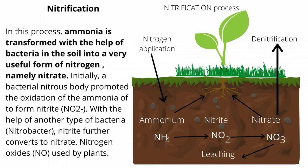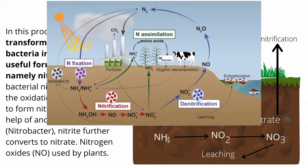Nitrification. In this process, ammonia is transformed with the help of bacteria in the soil into a very useful form of nitrogen, namely nitrate. Initially, a bacterial nitrous body promoted the oxidation of ammonia to form nitrite. With the help of another type of bacteria, nitrobacter, nitrite further converts to nitrate, which is the nitrogen oxide form used by plants.